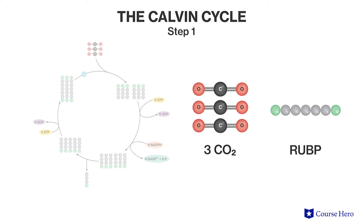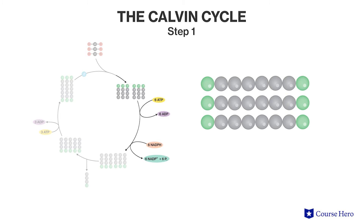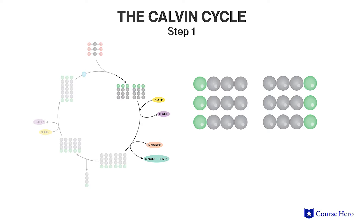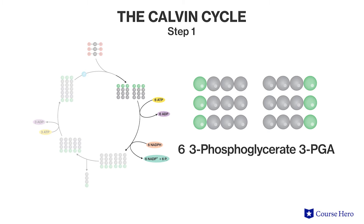The main steps in this cycle begin with rubisco combining a five-carbon sugar, ribulose bisphosphate or RUBP, with carbon dioxide. A total of three carbon dioxide molecules are combined with three RUBP molecules. The result is a very unstable compound which splits in half, forming a total of six three-carbon molecules known as three-phosphoglyceric acid, or 3-PGA. Because this process converts carbon dioxide into organic compounds used by living things, it is known as carbon fixation.